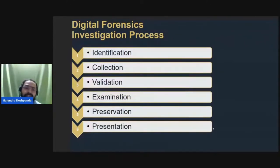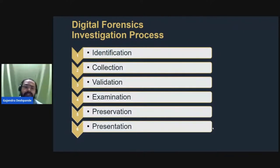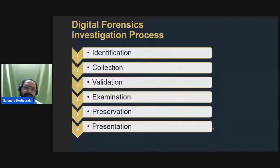When identifying evidence in software, the investigators take a snapshot of the entire disk. They do not perform validation or examination on the original data — they work on a copy. The original data and the copy are compared to ensure nothing has changed, and this can be done using hash algorithms.